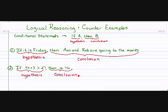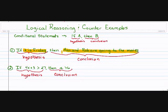And that's working with conditional statements: if is our hypothesis, then is our conclusion. Let's go over this again. Our hypothesis of the first one: it's Friday. Our conclusion: Ann and Rob are going to the movies. We left out the if and then. Number two — our hypothesis: 4x plus 3 is greater than 27. Our conclusion: x is greater than 6.